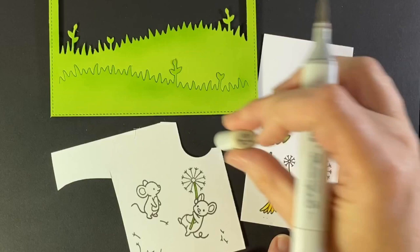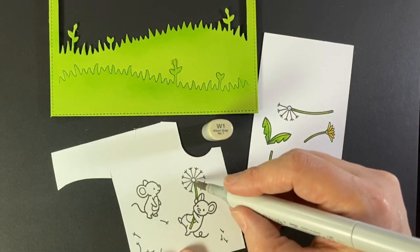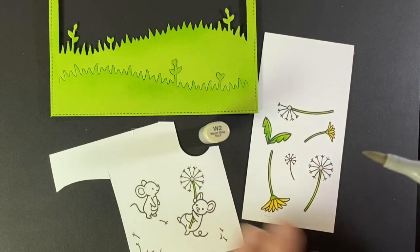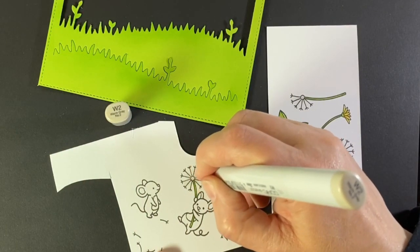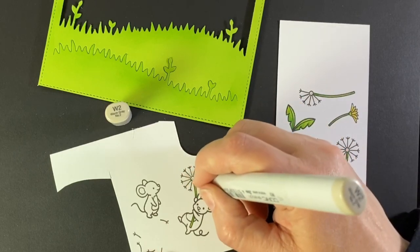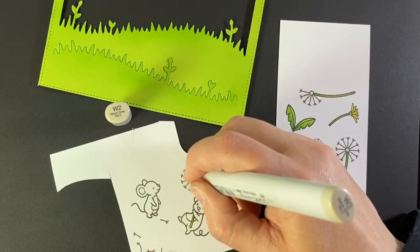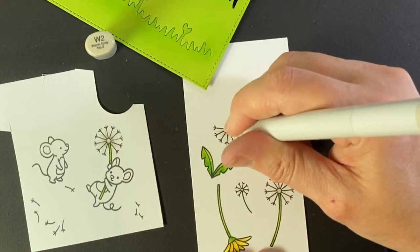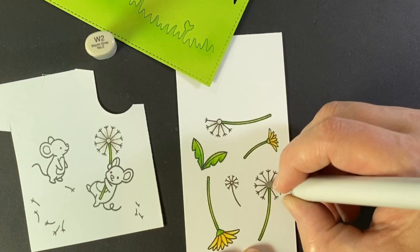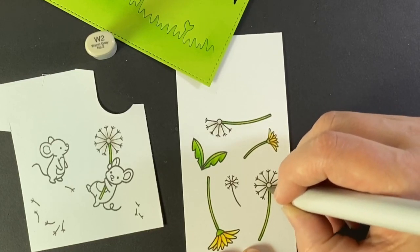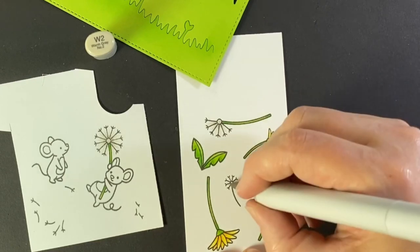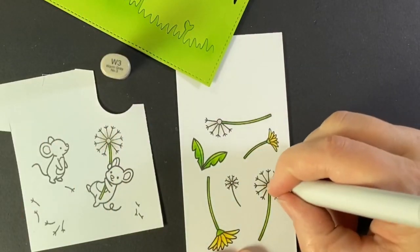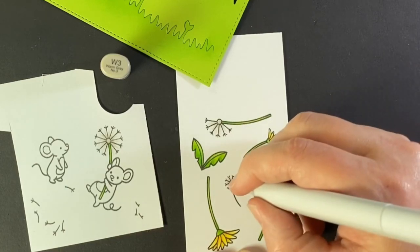On to the seeded dandelions. I'm putting a little warm gray for the centers, W1 and 2, and then inside the fluffy areas I'm putting some lines using this W2 so that it looks like they're full and rounded, more 3D. Adding in those extra seeds in the background and then around the center. I'm using a W3 to get that to look darker.